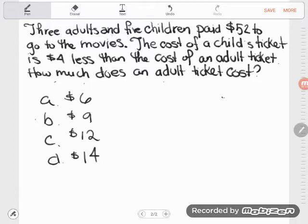I'm going to take a look at this problem: Three adults and five children paid $52 to go to the movies. The cost of a child's ticket is $4 less than the cost of an adult ticket. How much does an adult ticket cost?